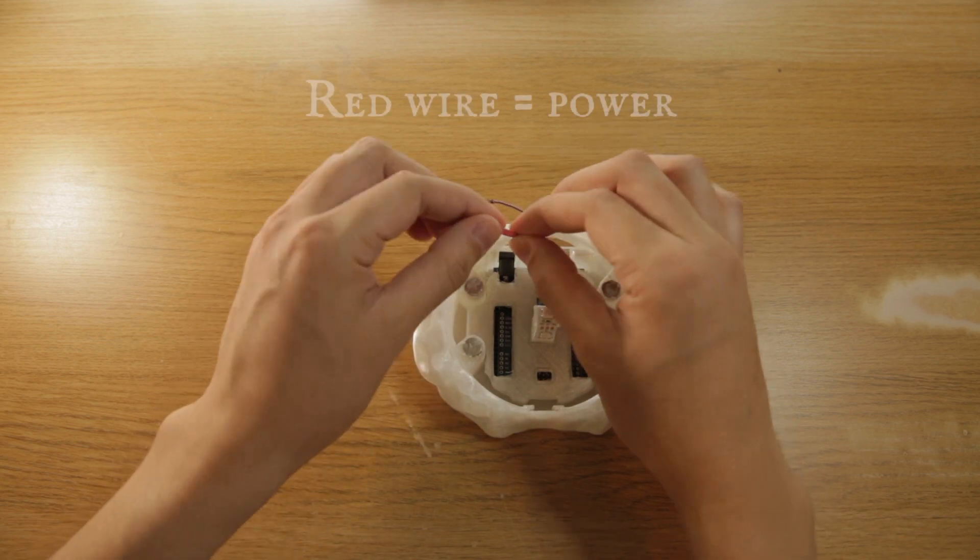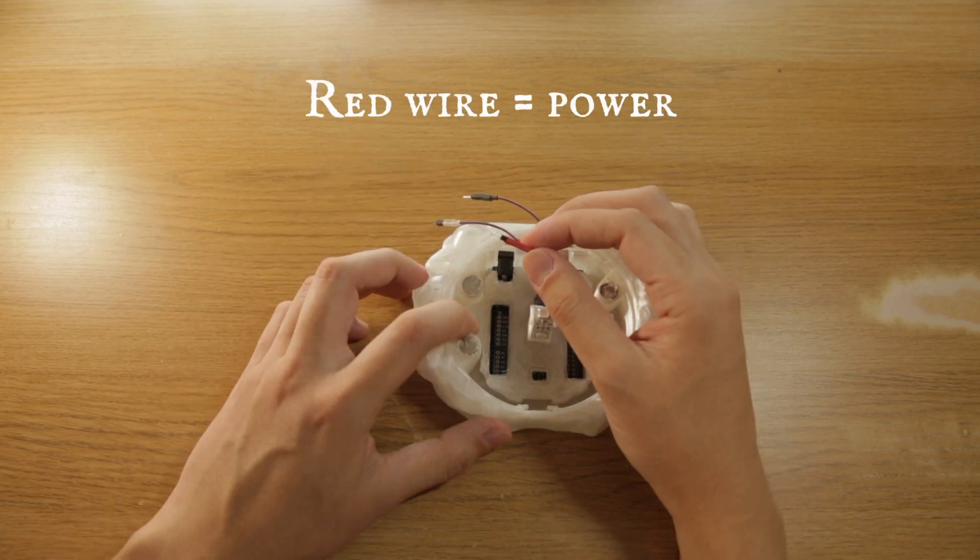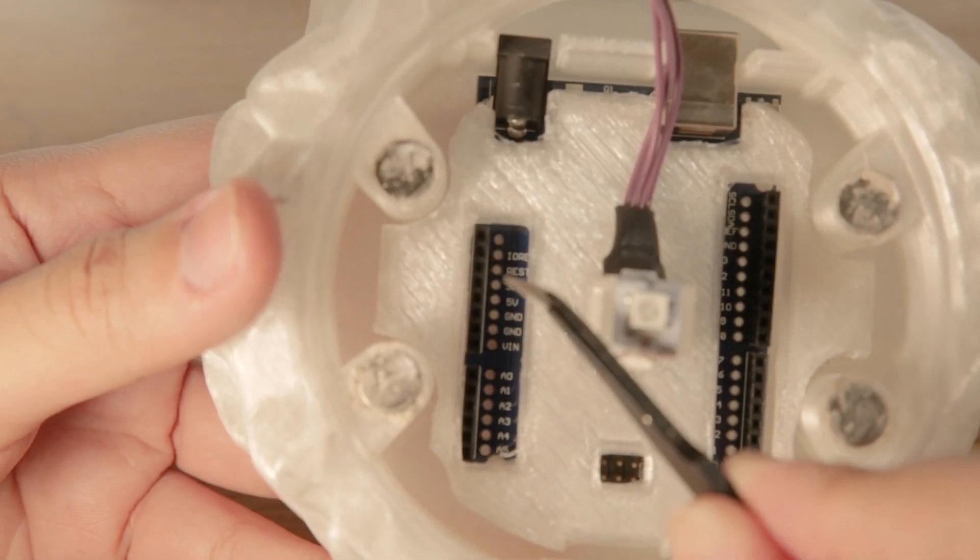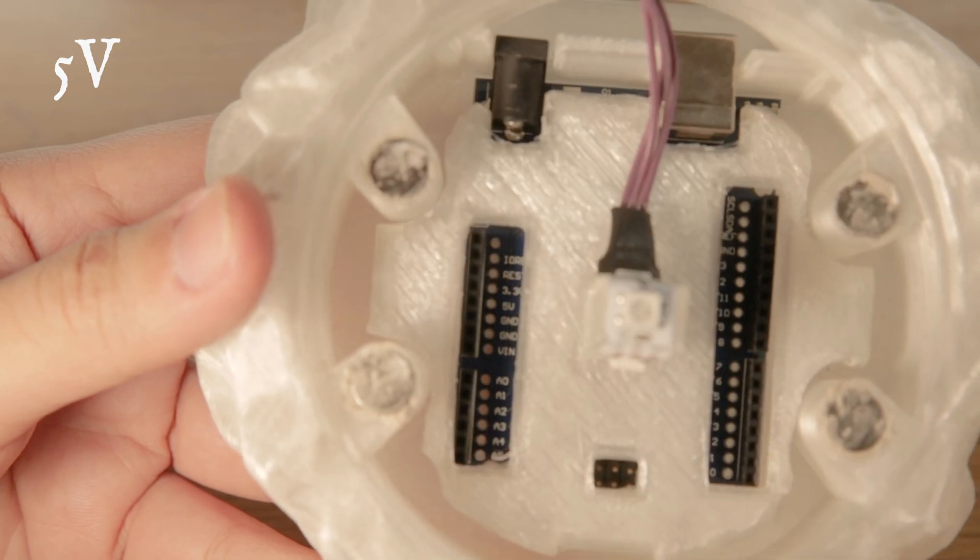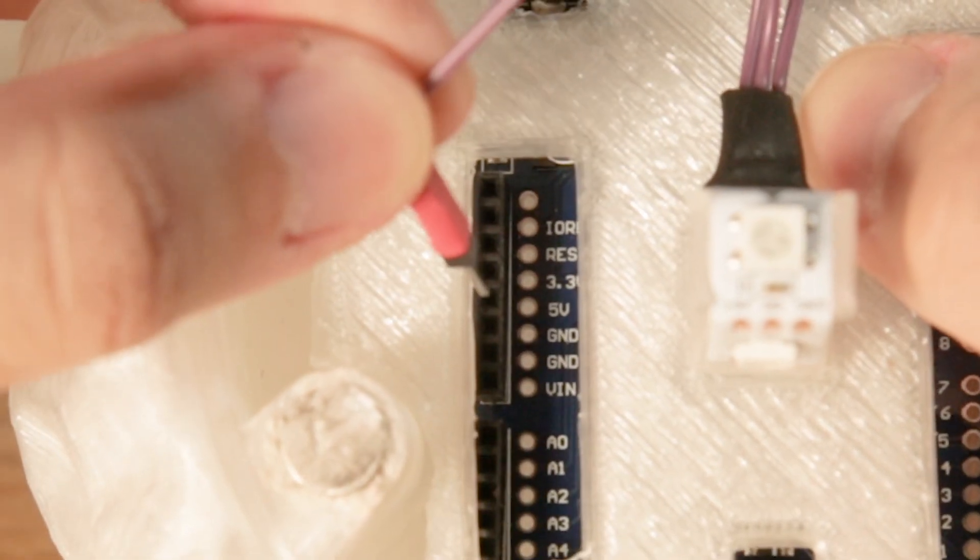The red one is going to be the first one we're plugging in, provides power to the lights. We're going to be plugging that into the port that's marked five volts, 5V on this side here.